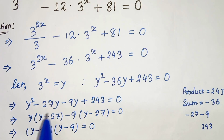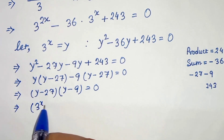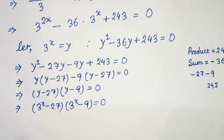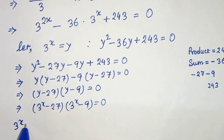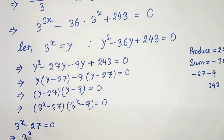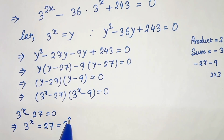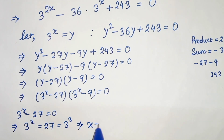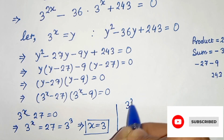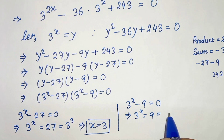Since we chose y as 3 to the power of x, we write 3 to the power of x minus 27 equals to 0 and 3 to the power of x minus 9 equals to 0. From the first equation, 3 to the power of x equals 27, and 27 is 3 cubed, therefore x equals 3. From the second equation, 3 to the power of x equals 9, and 9 is 3 squared.